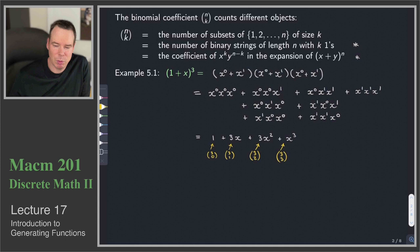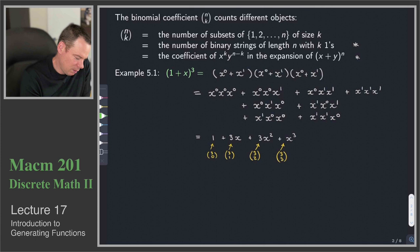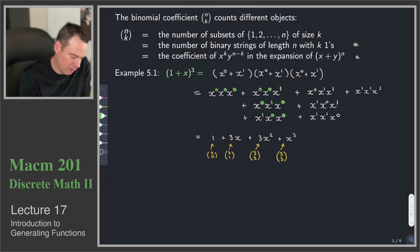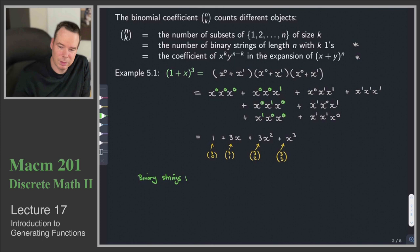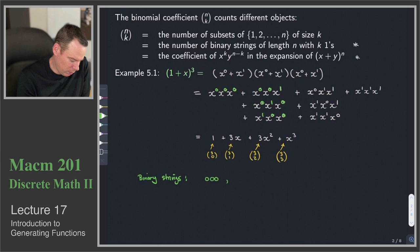We did this in a funny way to make the connection with binary strings. If I look at the powers — 0,0,0 then 0,0,1; 0,1,0; 1,0,0 — what we have is that through algebra we have listed binary strings of length 3, grouped by how many ones they have: strings with zero ones, one one, two ones, and three ones.